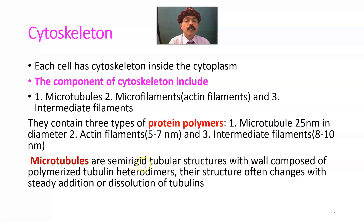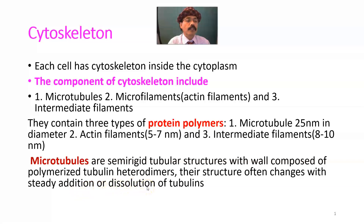Microtubules are semi-rigid tubular structures with walls composed of polymerized tubulin heterodimers. Their structure often changes with steady addition and dissolution of tubulin — so the size is not static. Size changes according to need; it may be increased or decreased by addition or dissolution of tubulin. This is one of the cytoskeleton components: microtubules. They are semi-rigid tubular structures.